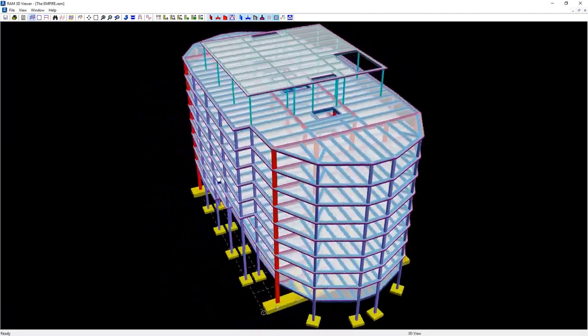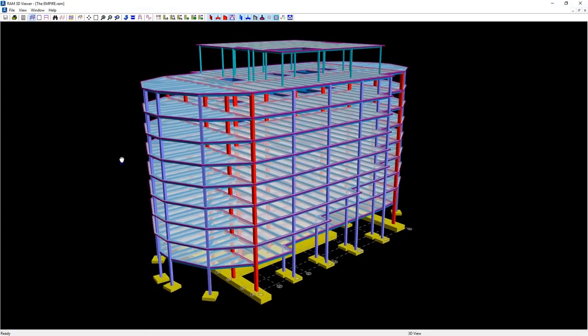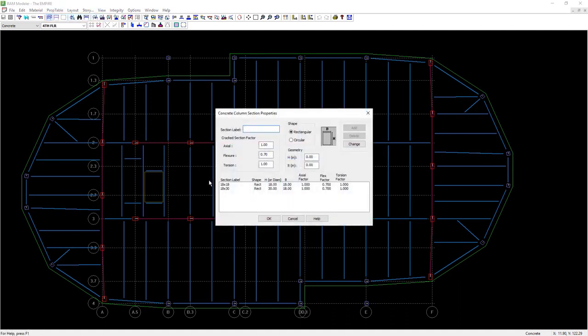In the RAM Structural System modeler, even complicated buildings can be modeled quickly and accurately. Part of that modeling is to specify the cross sections, including the cracked factors.